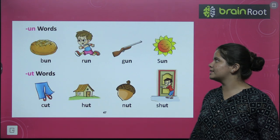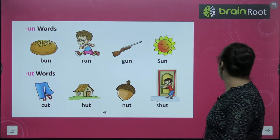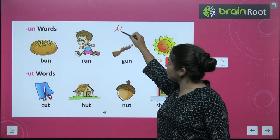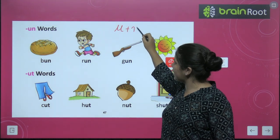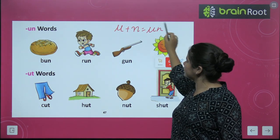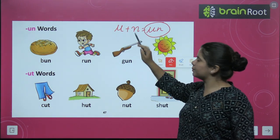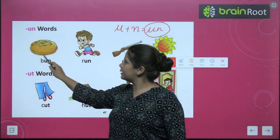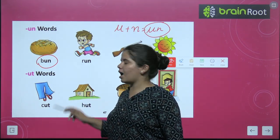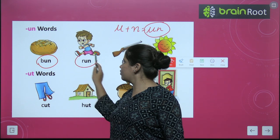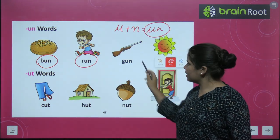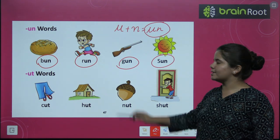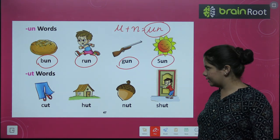Now we will see -un words. Words where U plus N, -un, comes at the end. B-U-N, bun. R-U-N, run. G-U-N, gun. S-U-N, sun.